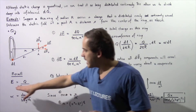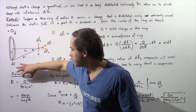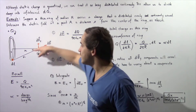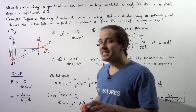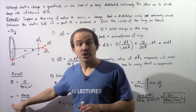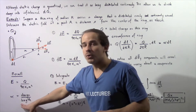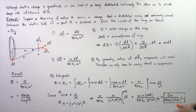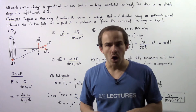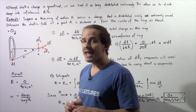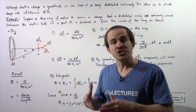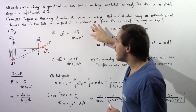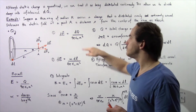Recall the equation for electric field. The electric field as a result of some charge q is given by that charge q divided by 4πε₀ multiplied by m squared, where m is the distance between the two points. So in Step 1, we write: dE is equal to dQ divided by 4πε₀ multiplied by m squared.